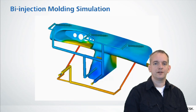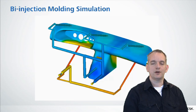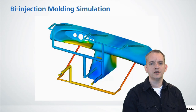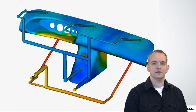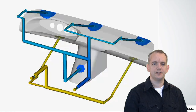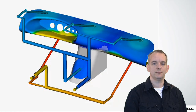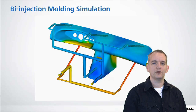Another heavily automotive-oriented feature we added for this release is bi-injection molding for midplane. Bi-injection molding is the process where you inject two different materials into one cavity through two completely independently controlled nozzles — effectively two injection molding machines injecting either simultaneously or in sequence into one cavity. This is a very automotive-oriented feature.